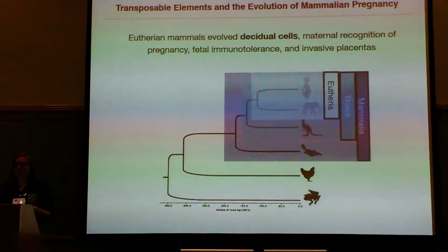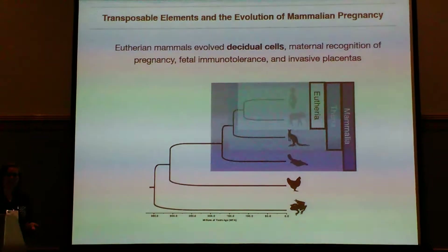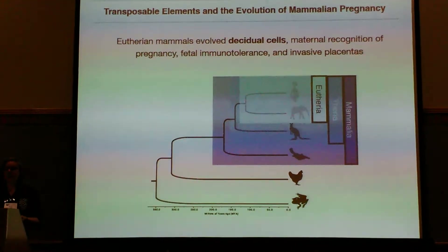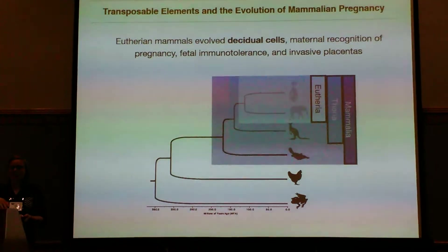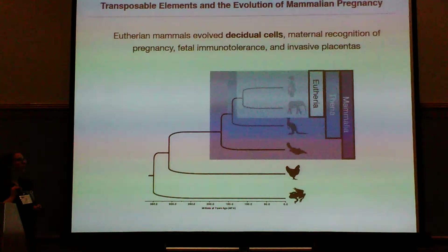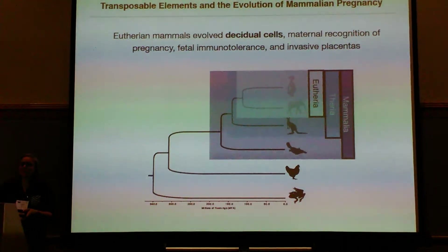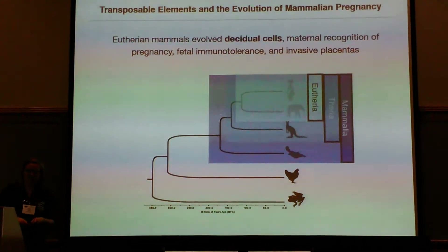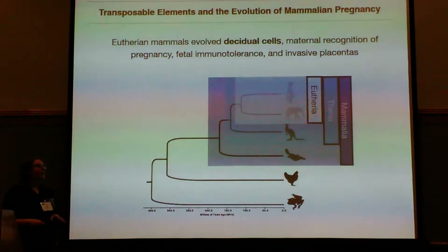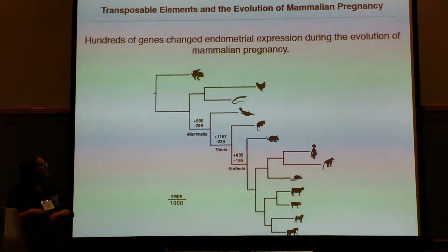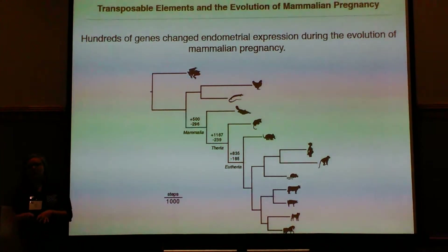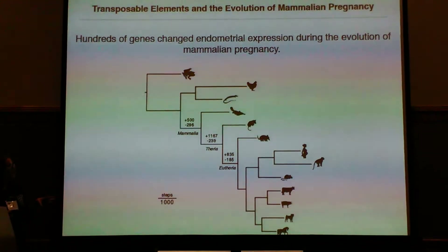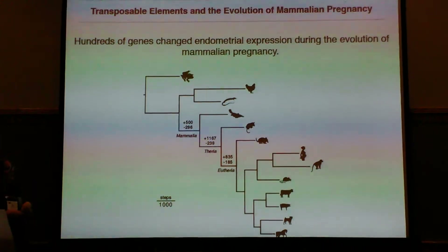In concert with all these phenotypic changes, we've come to know there are also gene expression changes. I have 27 different organisms from both mammals of all kinds and some outgroups that we have RNA sequencing data from. I used a parsimony-based ancestral transcriptome reconstruction method to find that hundreds of genes change expression during the evolution of mammalian pregnancy.